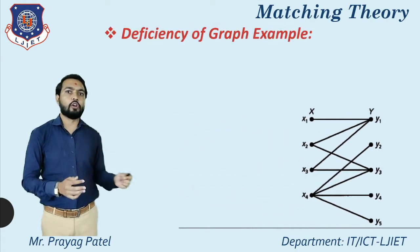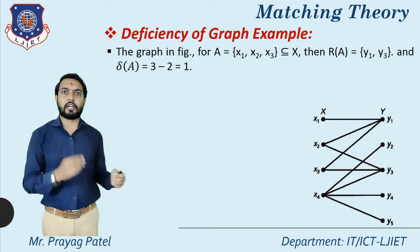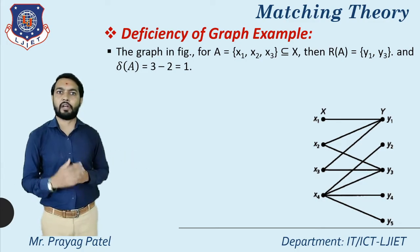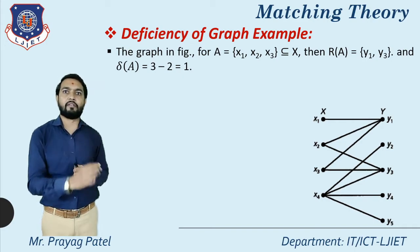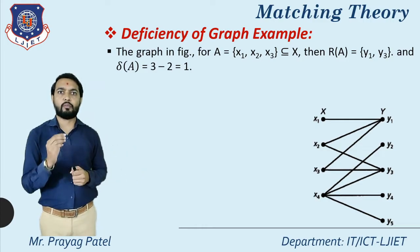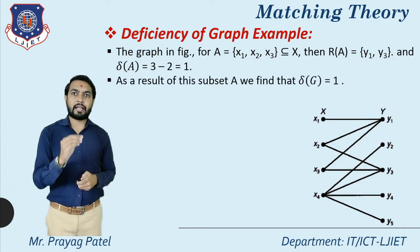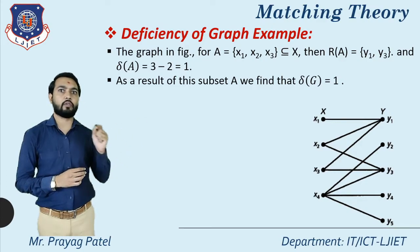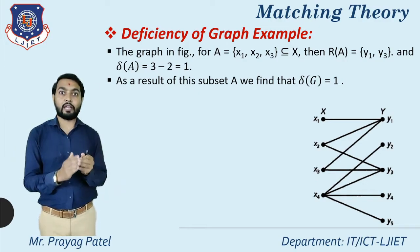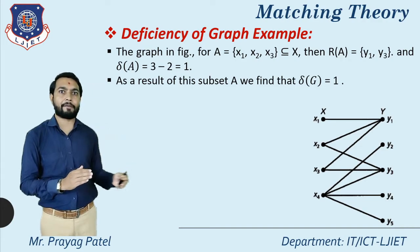For the deficiency of graph example: A = {x1, x2, x3}, R(A) = {y1, y3} according to this graph, because x1 is connected with y1, x2 connected with y1 and y3, and x3 connected with y1 and y3. So δ(A) = 3 − 2 = 1, which means δ(G) = 1. The graph deficiency is one.